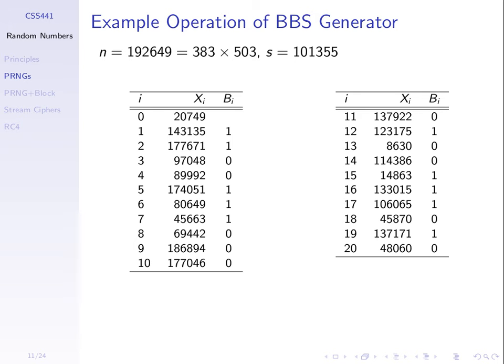We won't go through the BBS example in class in detail. The slide lists values for different iterations using some initial values: p times q gives n from two primes — 383 is a very small prime used just for this example. You choose some random s, take s squared mod by n to get 20,749, take that squared mod by n to get the next number, and keep doing that. The sequence that comes out is the last bit of those numbers — if it's odd it's 1, if it's even it's 0.